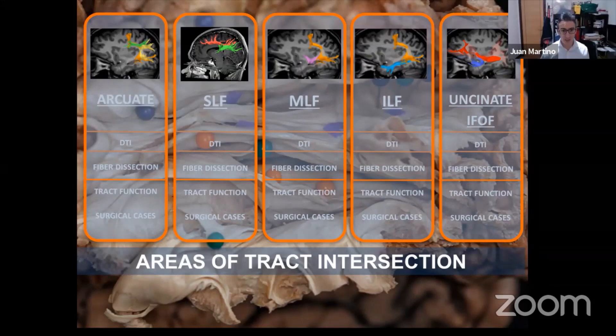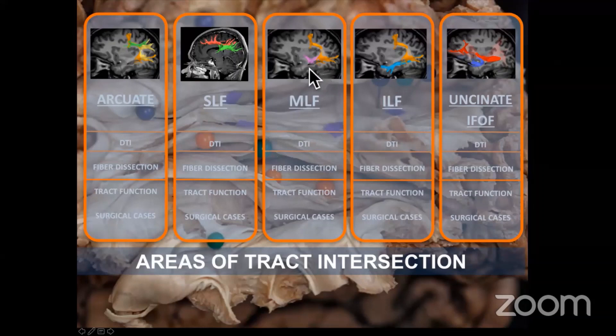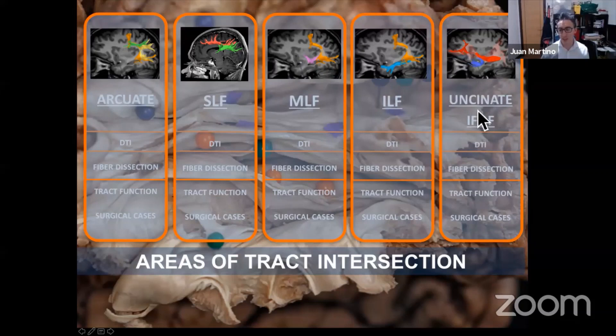I will talk mainly about the associative connections related to the perisylvian area, mainly the arcuate fasciculus and superior longitudinal fasciculus, and get into a discussion between these two tracks. Then the middle longitudinal fasciculus, the inferior longitudinal fasciculus, and then the tracks related to the insula — the uncinate fasciculus and inferior fronto-occipital fasciculus. I will also talk about the areas of tract intersection.